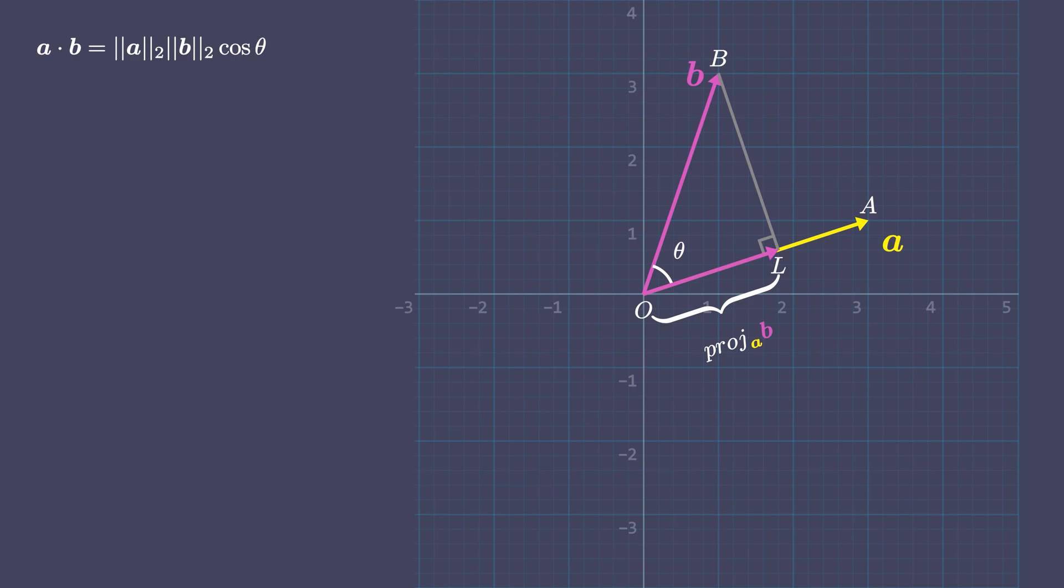From the right angle triangle OLB, cos theta equals the length OL divided by OB. It can be rewritten as OL equals OB cos theta, that is magnitude of vector B times cos theta.